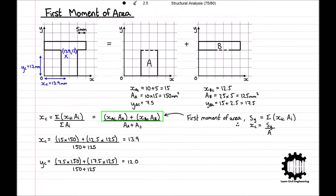In the previous video, we introduced the concept of the first moment of area and how we can use it to determine the centroid of a complex region. The first moment of area is computed as a distance relative to the axes. When working out the x-coordinate to the centroid of a complex section, the first moment of area is relative to the y-axis, denoted Sy, and is equal to the sum of the x-coordinate to the centroid times the area for each compound section. The x-coordinate to the centroid of the complex section is equal to Sy divided by the total area of the complex section.